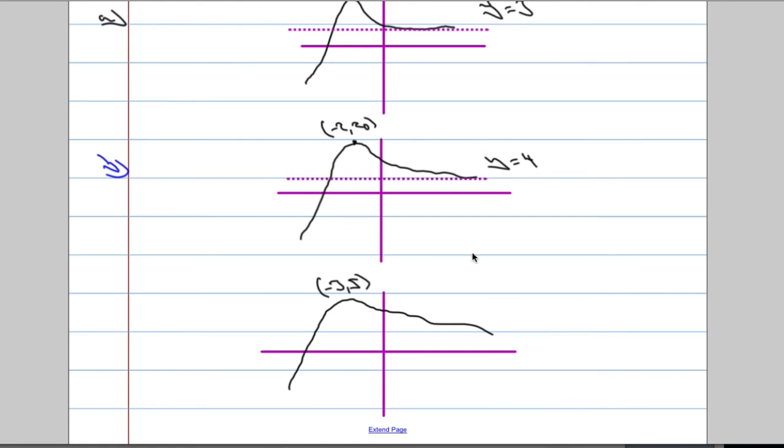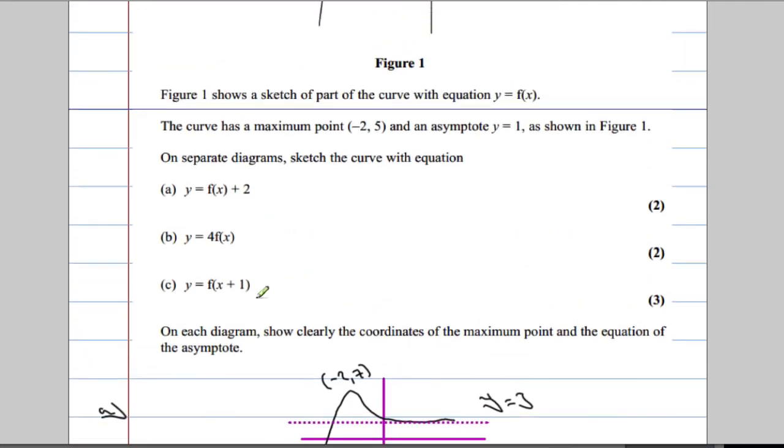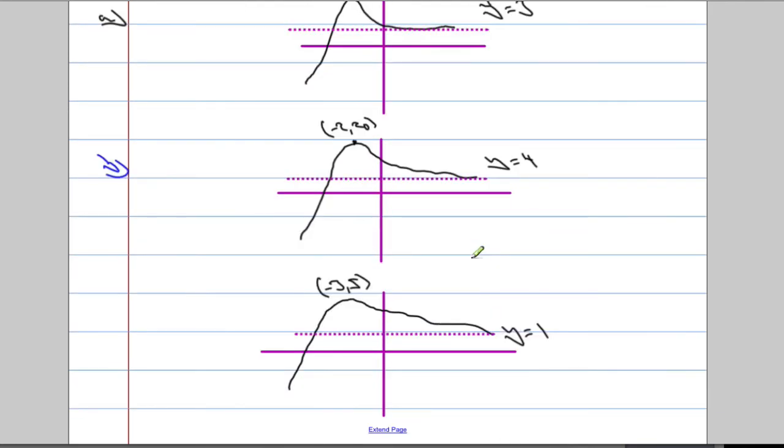So it's now negative 3, but it still goes up as high as 5. And the asymptote, in this case, we've only shifted everything left or right. So the asymptote ain't going to move. The asymptote is going to be at y equals 1, like it was earlier. We were asked to show clearly the coordinates of the maximum point and the equation of the asymptote, which we have done. We should be okay.